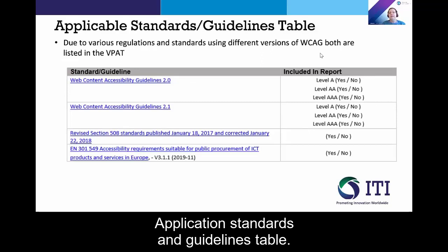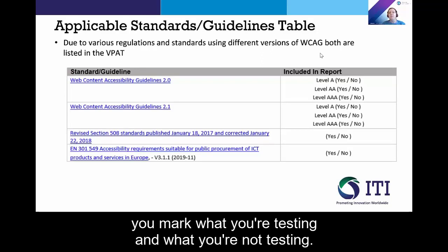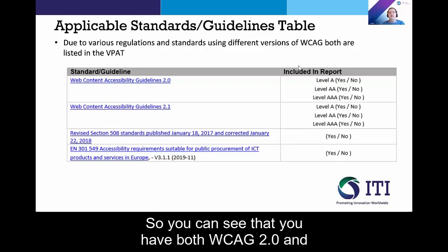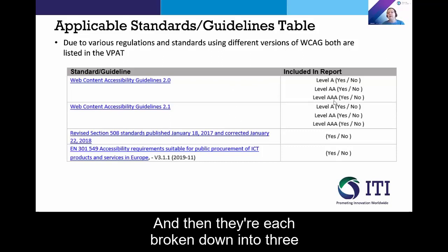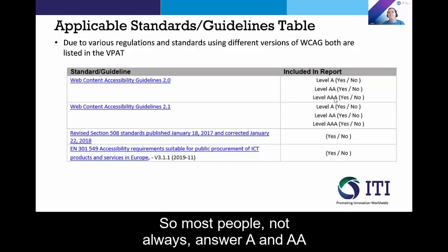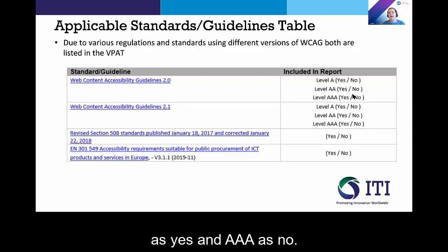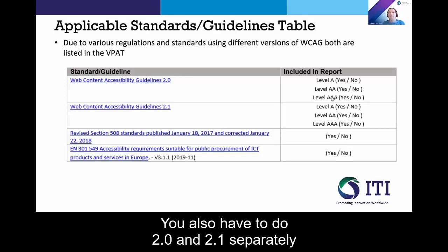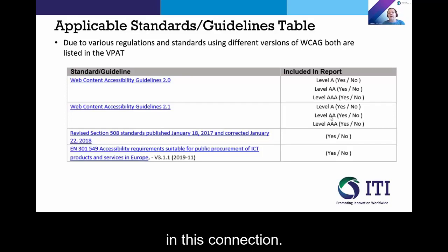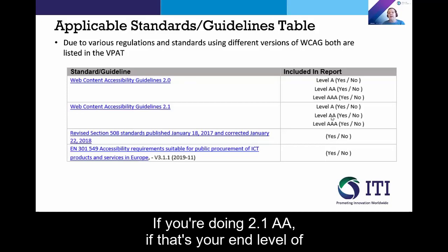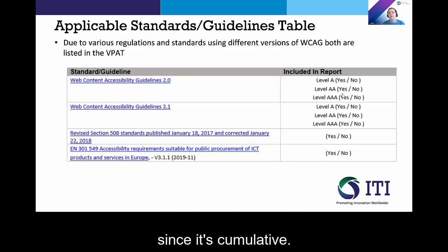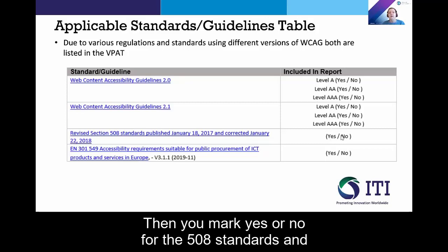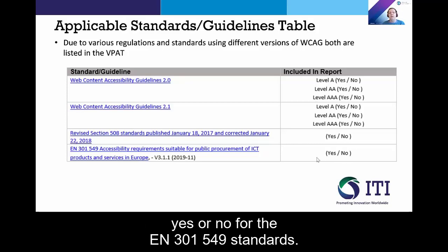Application standards and guidelines tables are at the top of the ACR, and this is where you mark what you're testing and what you're not testing. You have both WCAG 2.0 and WCAG 2.1 guidelines, each broken down into three levels: A, AA, and AAA. Most people answer A and AA as yes, and AAA as no. If you're disclosing AAA guidelines, then you would check yes for AAA. You also have to do 2.0 and 2.1 separately. So if you're doing 2.1 AA, you mark yes for A and AA for 2.1, and also yes for A and AA for 2.0 since it's cumulative. Then you mark yes or no for the 508 standards and yes or no for the EN 301 549 standards.